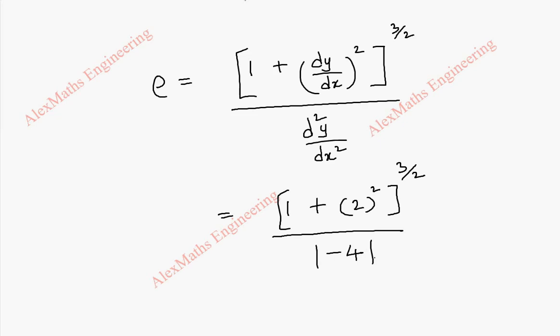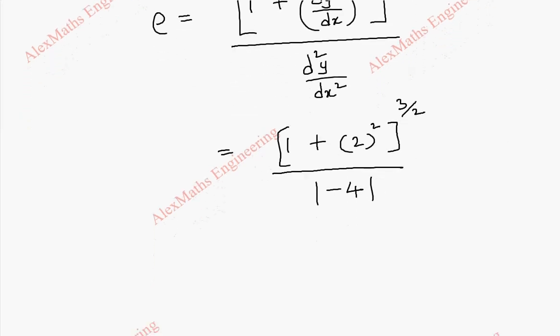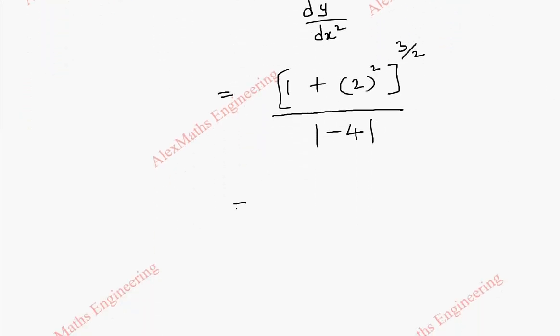So finally this is 1 plus 2 square is 4 whole power 3 by 2 divided by 4. So the final answer is 5 power 3 by 2 divided by 4.